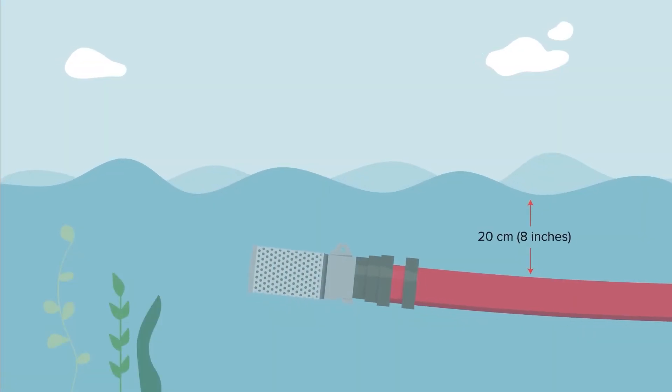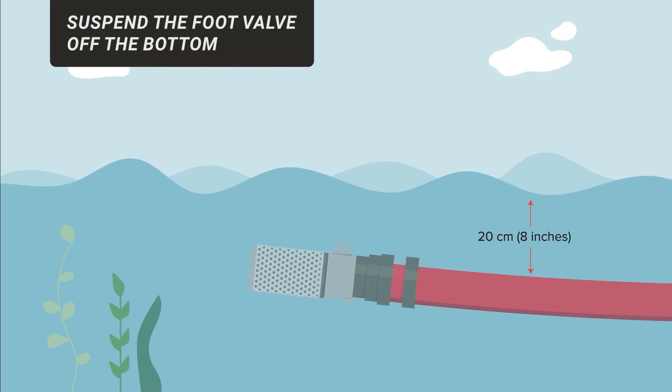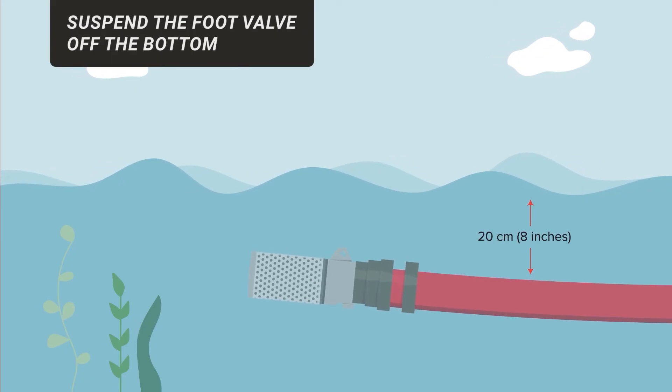Allowing at least 20 centimeters of water above the foot valve will stop any air from being sucked into the pump end. Suspend the foot valve off the bottom if sand, gravel, mud or other material could be drawn into the pump.